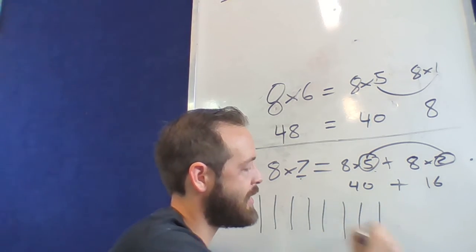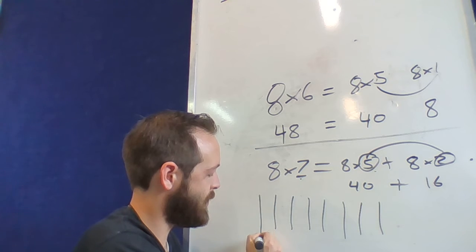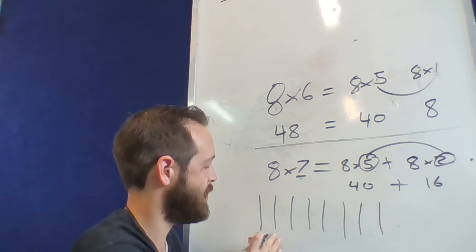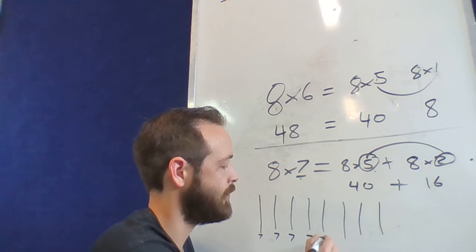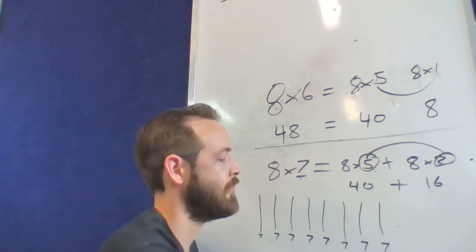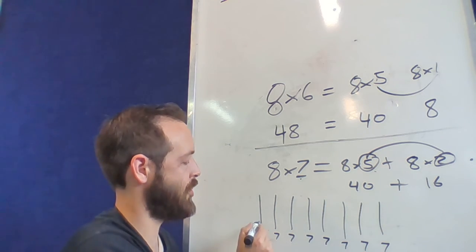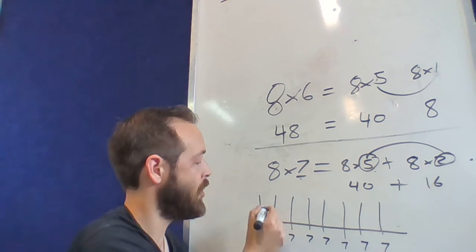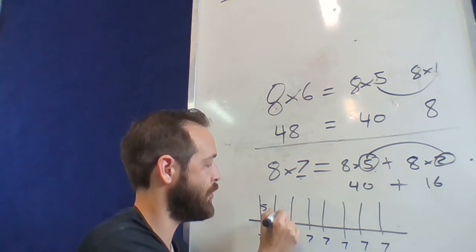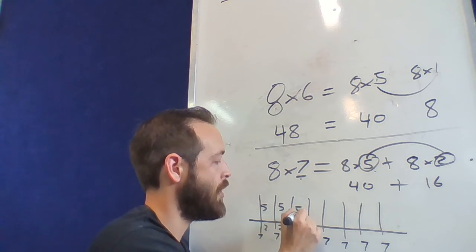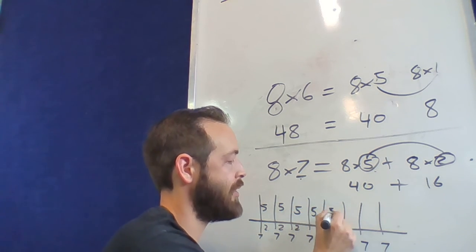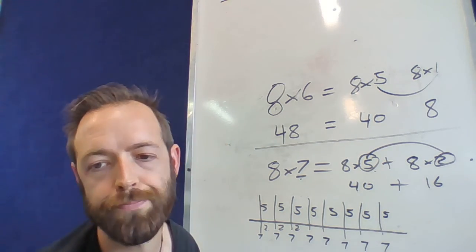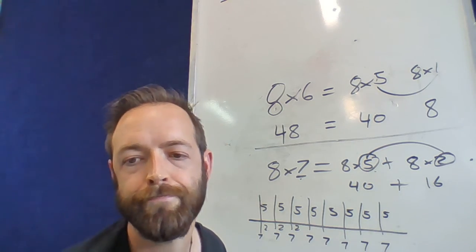Each one of these 8 weeks is going to have 7 days. Essentially what we're doing is breaking that 7 into 5 and 2, so instead of 7 we've got 5 and 2. What you're left with is 8 lots of 5 and 8 lots of 2. Hope that was helpful!